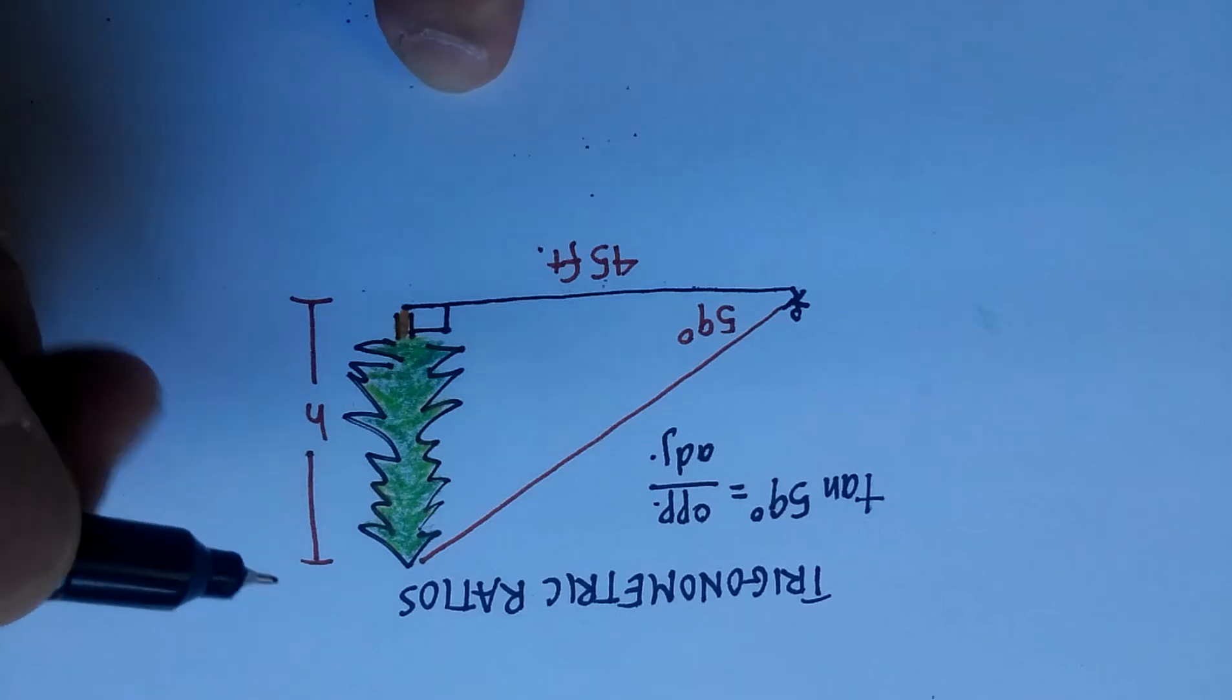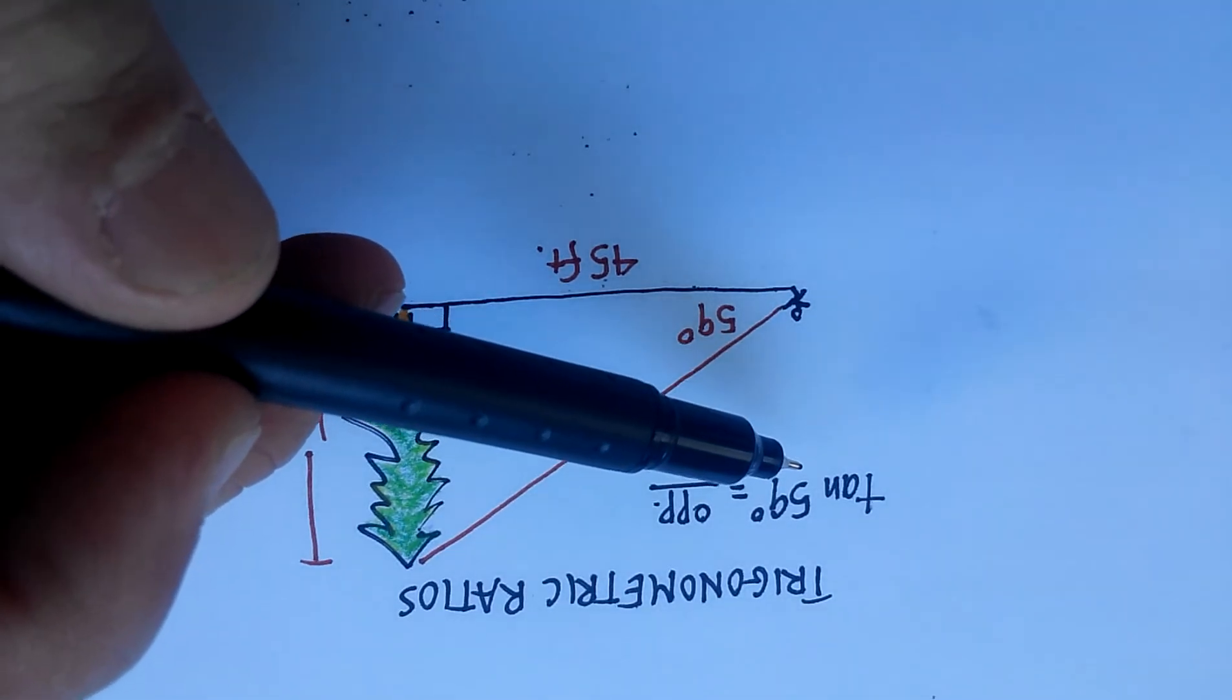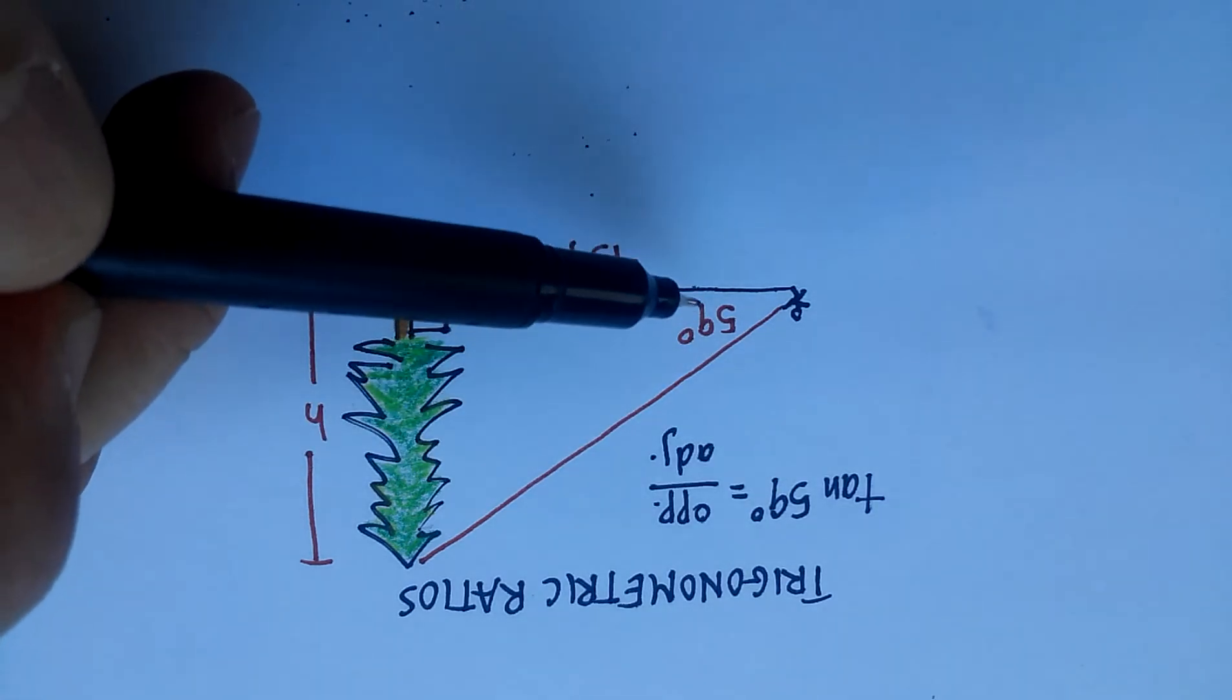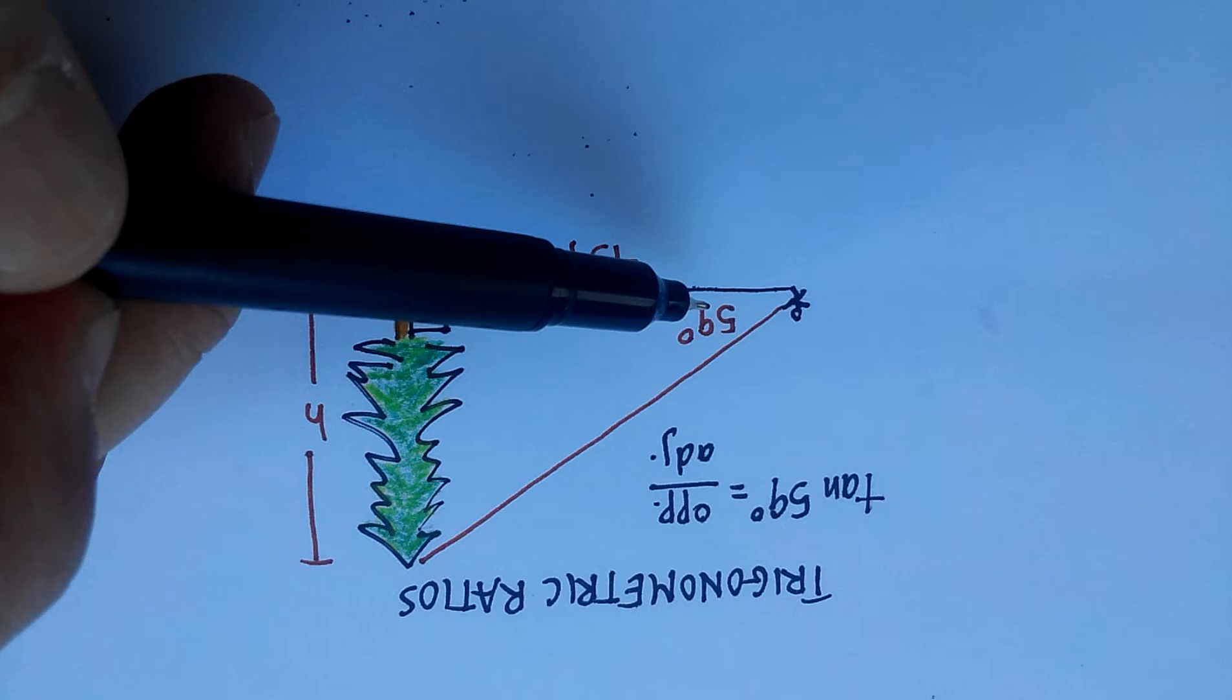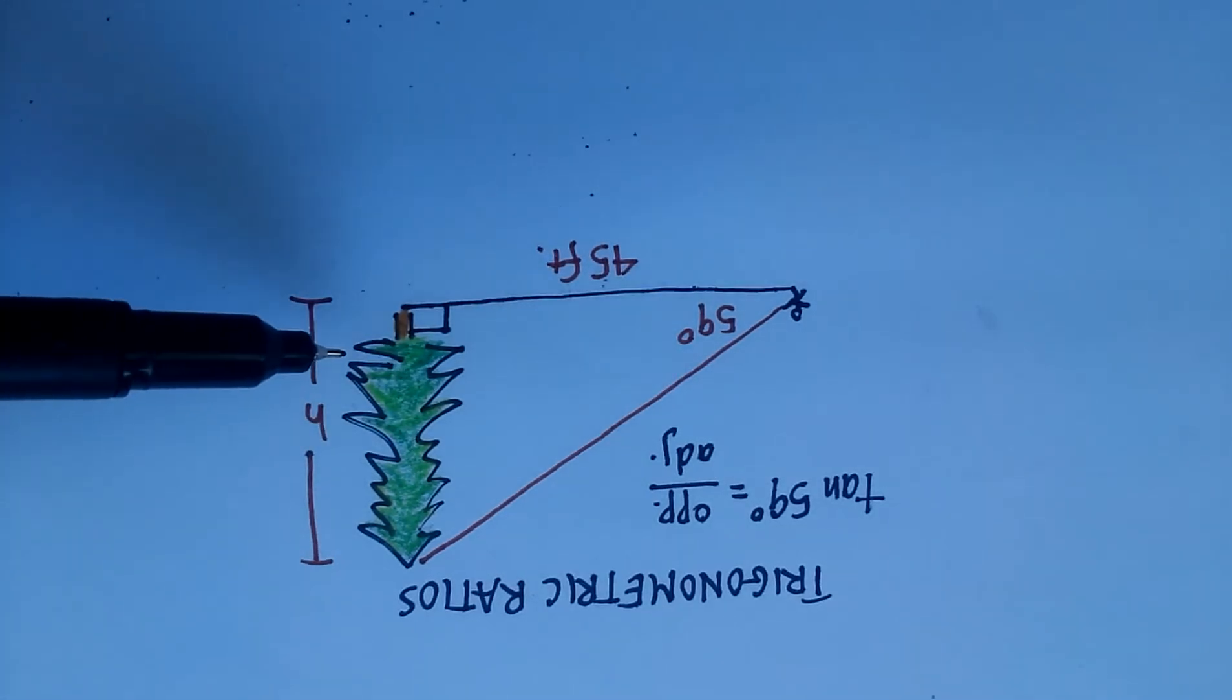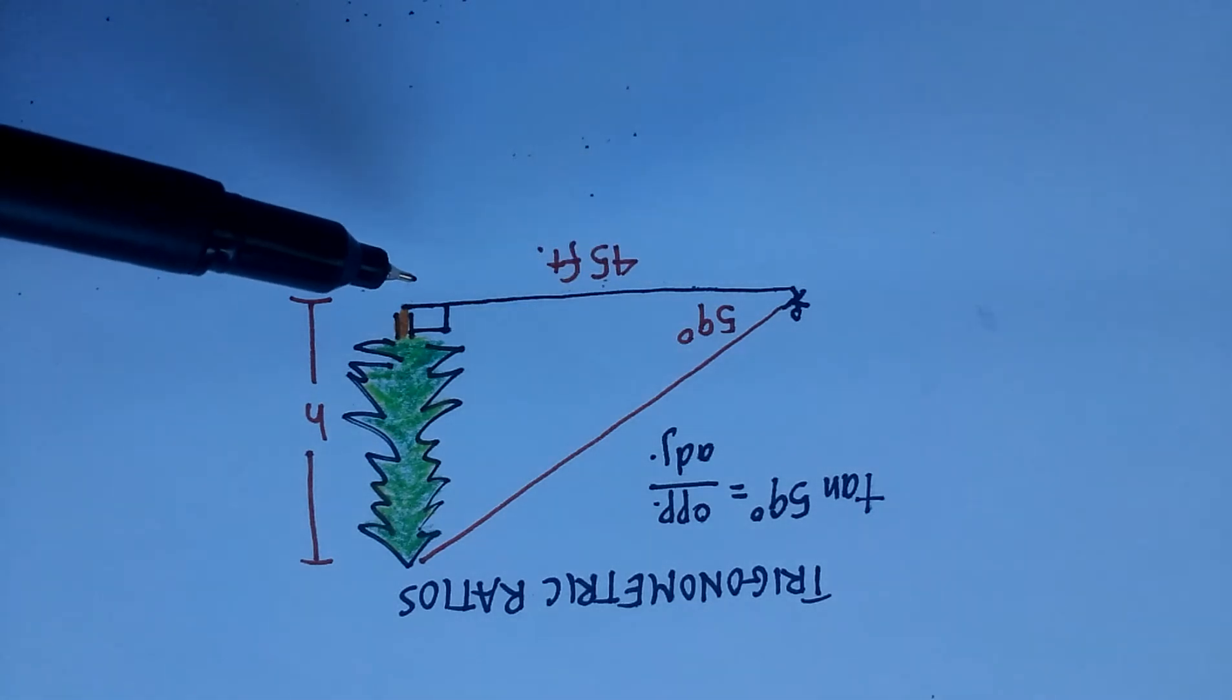Which one could we use? Probably the one that comes to mind the fastest is the tangent. Because remember that the tangent of any angle, in this case we'll say 59, is equal to the opposite side, so this side here, over the adjacent side, which we know to be 45 feet.